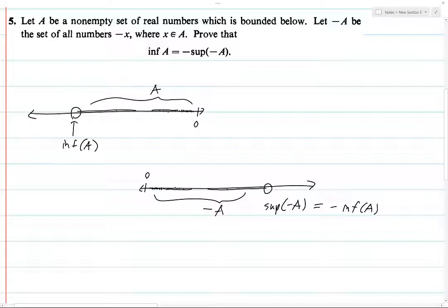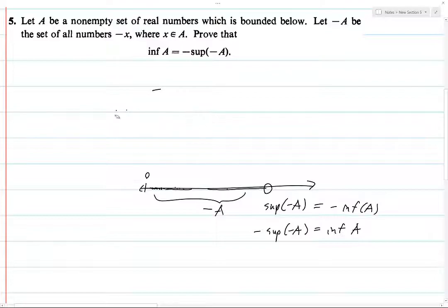If the supremum of negative A is negative the infimum of A, then you can move that minus sign over and get the result. That's what we want to prove. For me as a visual thinker, that's how I picture this. But now you have to translate this visual intuition into mathematical logic.